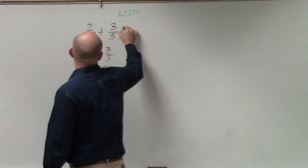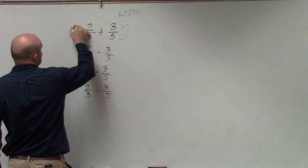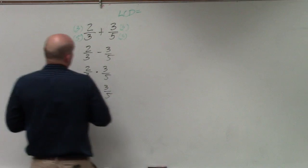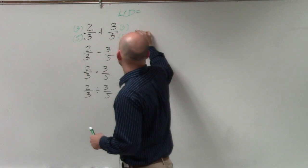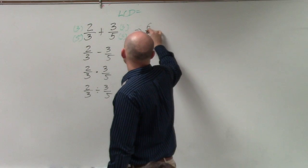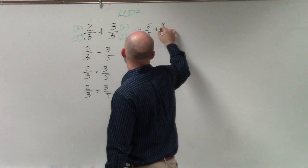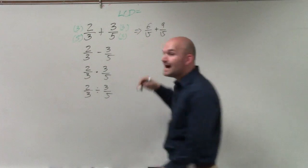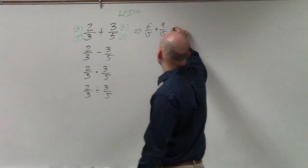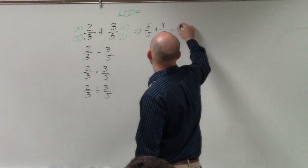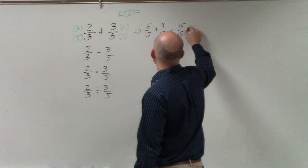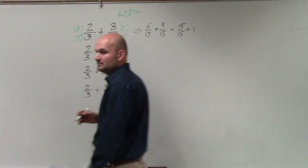So I need to make sure I multiply in the numerator and in the denominator. Now that produces 6 over 15 plus 9 over 15, which now since I have the same denominator I can just add the numerators which gives me 15 over 15, which I can reduce to 1.